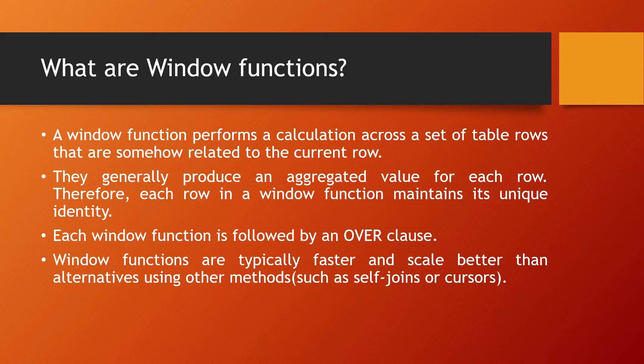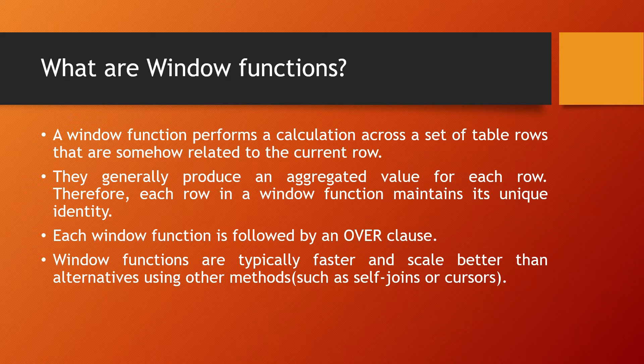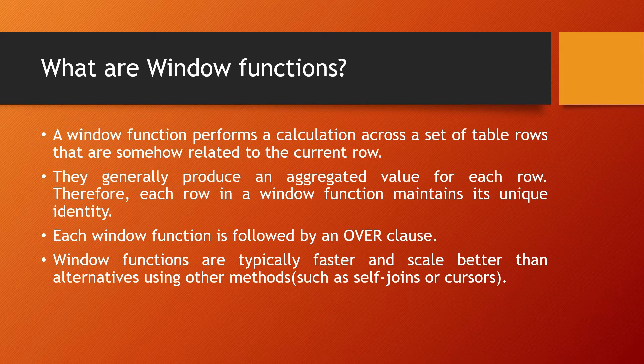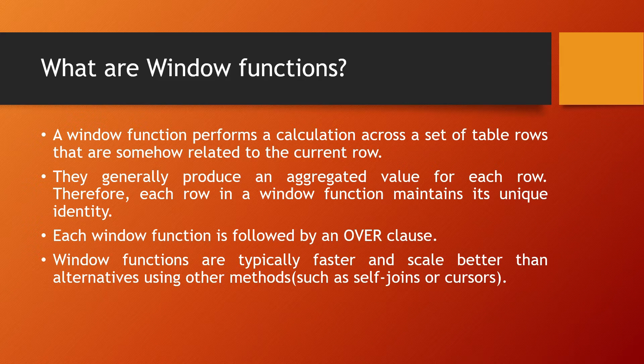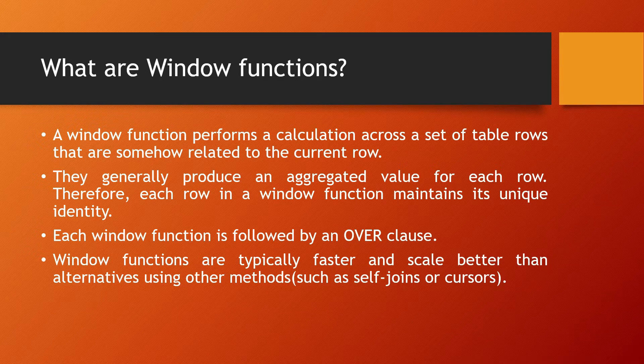Each window function is followed by an over clause. Window functions are typically faster and scale better than alternatives using other methods such as self-joins or cursors. So whatever we are doing with window functions, the same things can be done using joins or cursors, but using window function is an efficient method as it is faster and has better scaling.